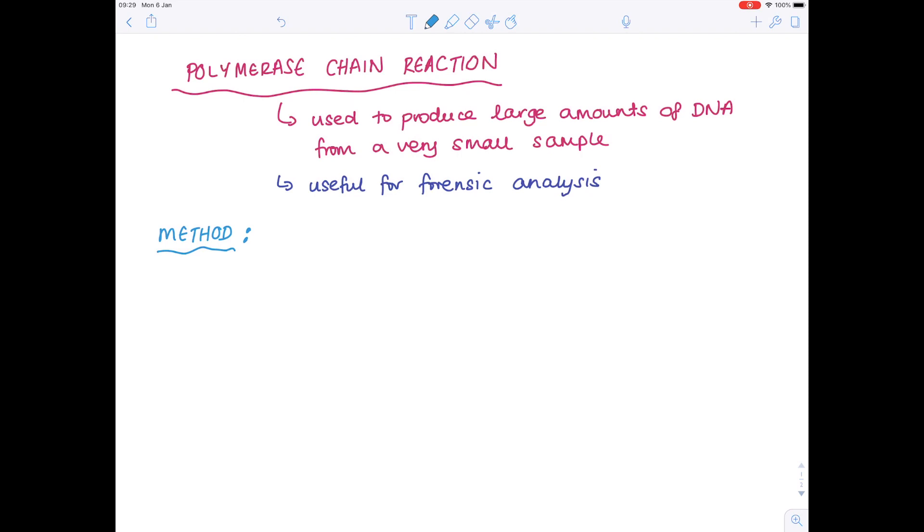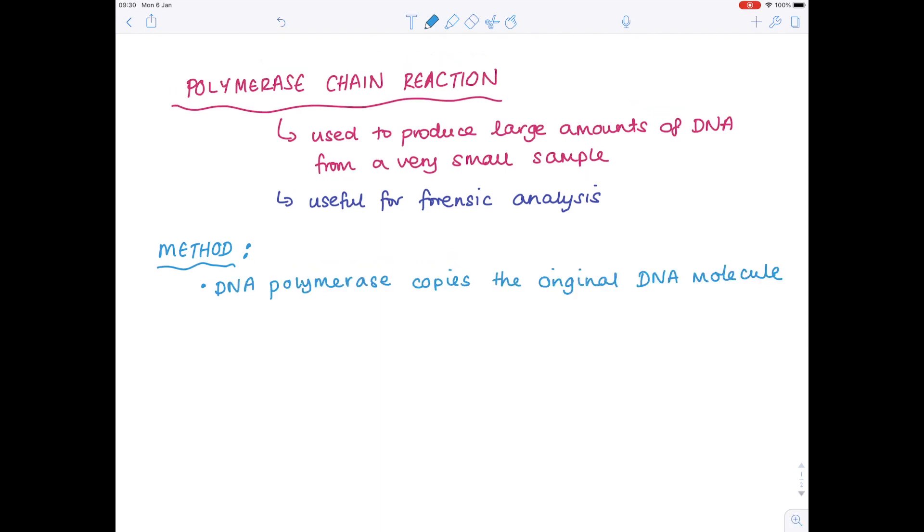But what method's actually used? First of all, we need the enzyme DNA polymerase. And what that does is it copies the original DNA molecule again and again, effectively doubling the quantity of DNA with each cycle of replication.